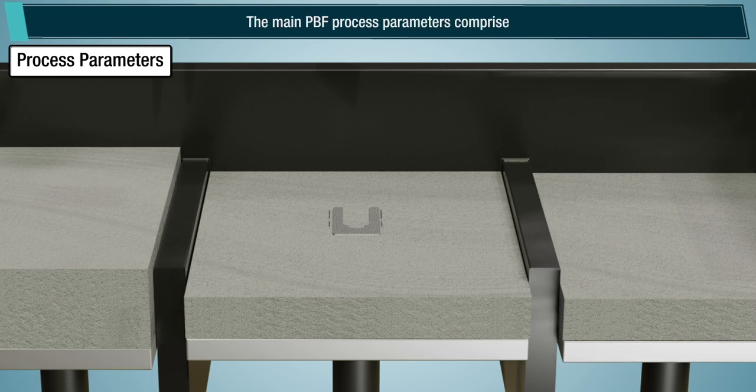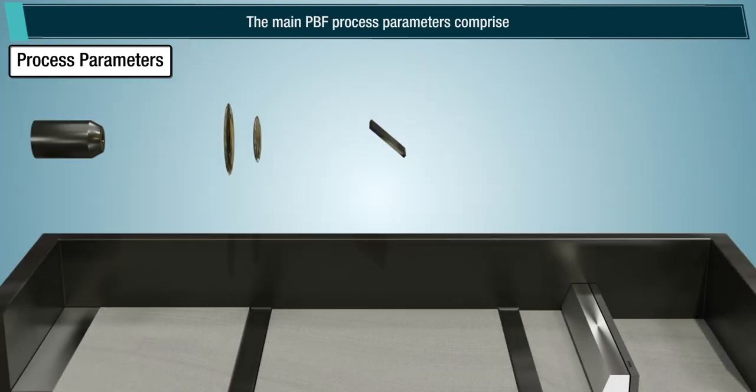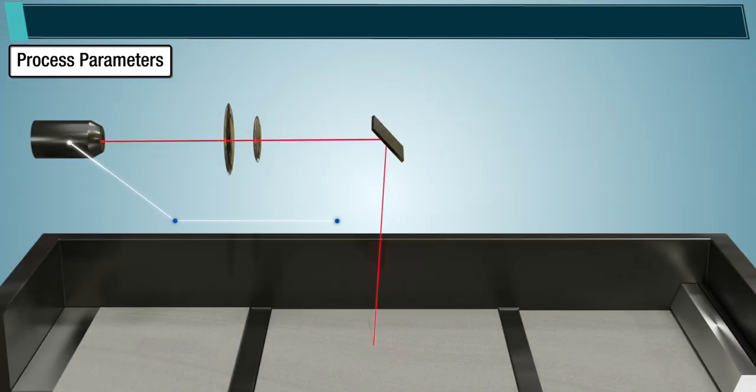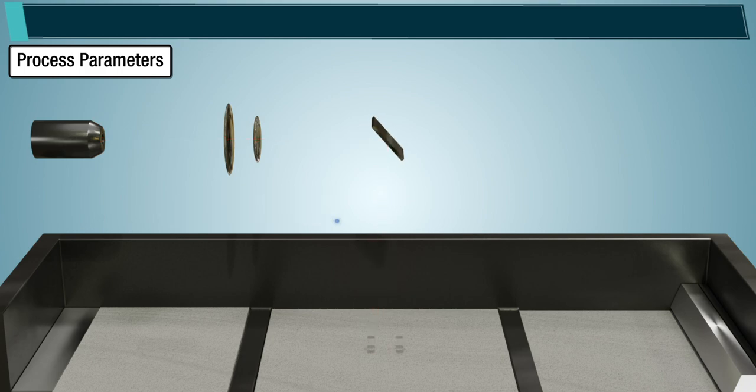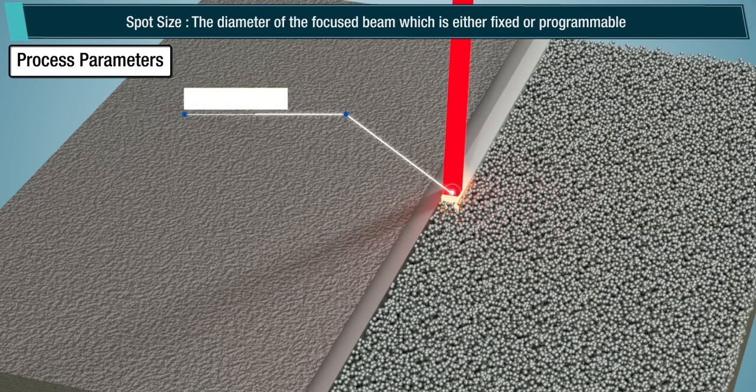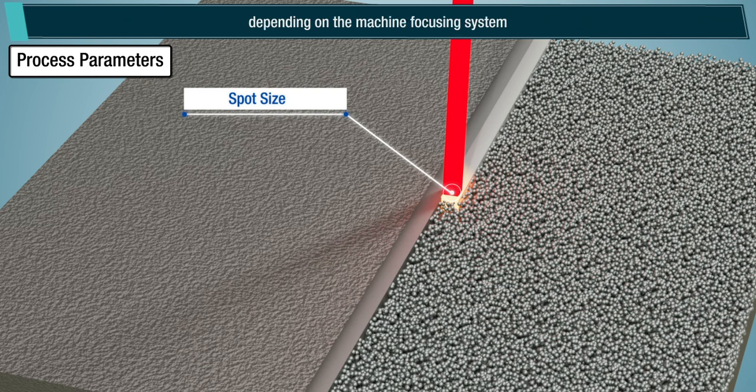The main powder bed fusion process parameters comprise heat source power, total energy emitted by the laser or electron beam per unit time, and spot size, the diameter of the focused beam which is either fixed or programmable depending on the machine focusing system.